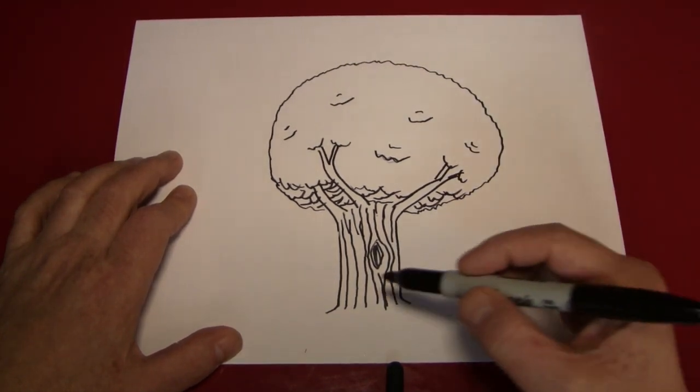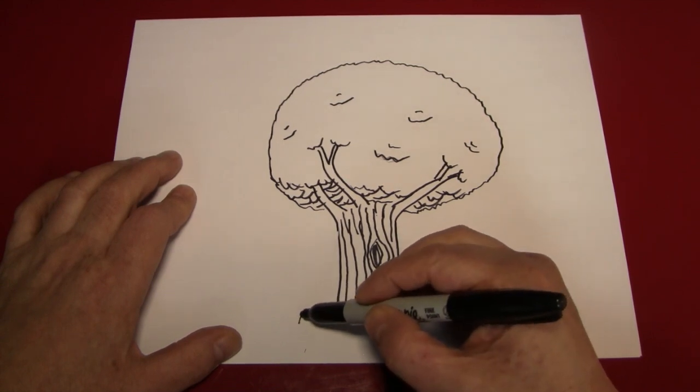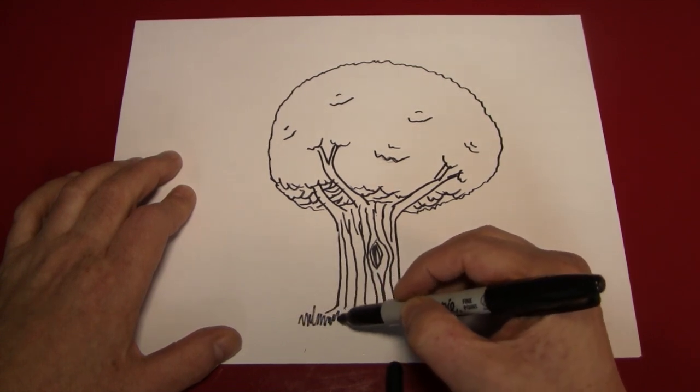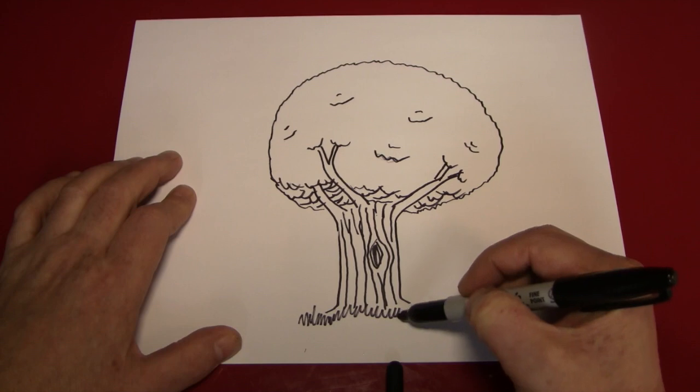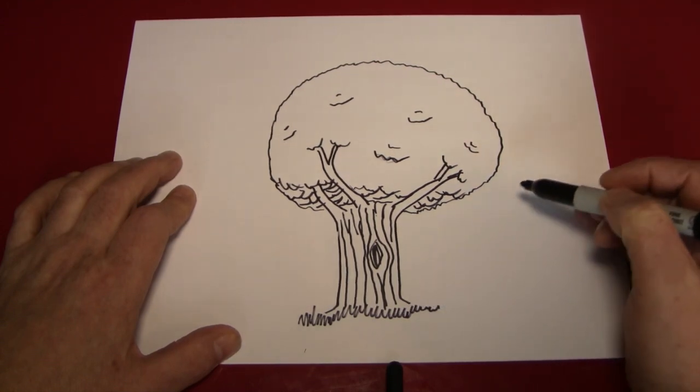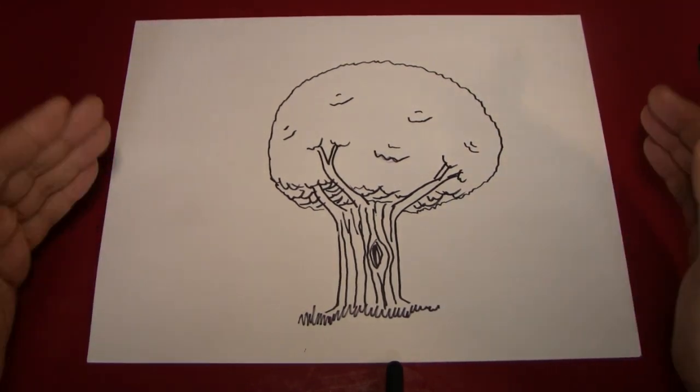And to finish off our picture, we're just going to make a little bit of grass right around the tree like that. And here we are. We have a tree.